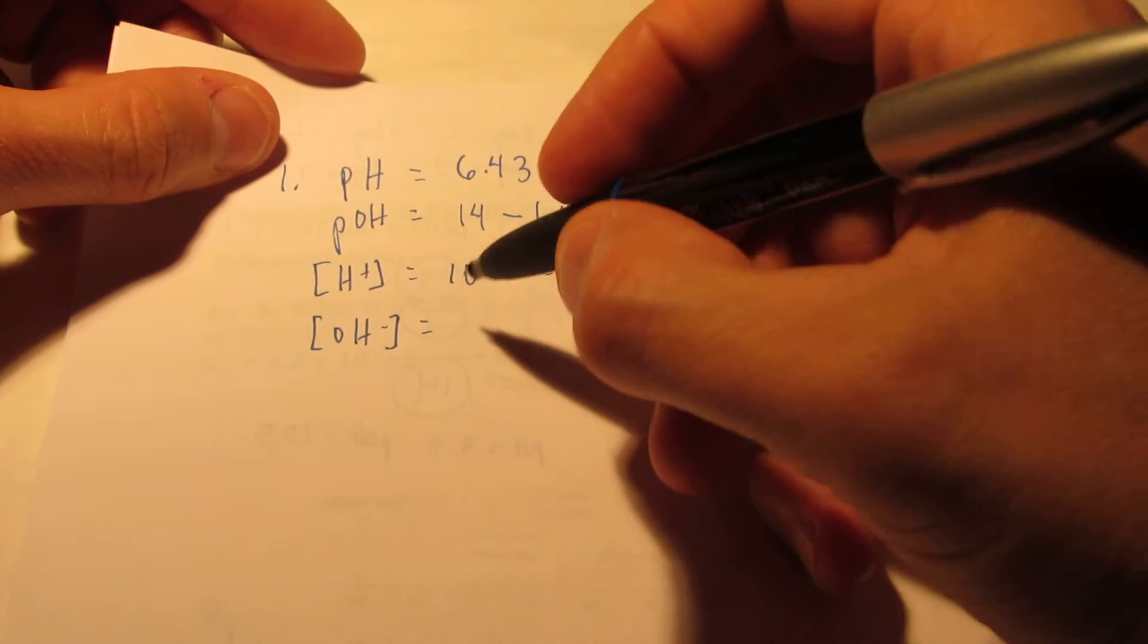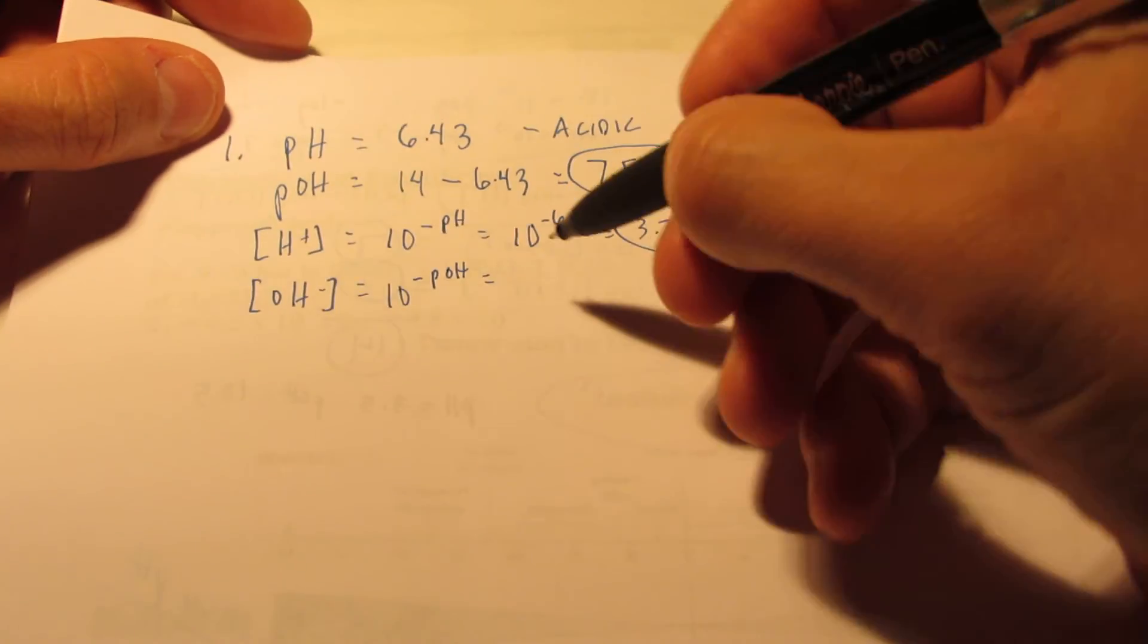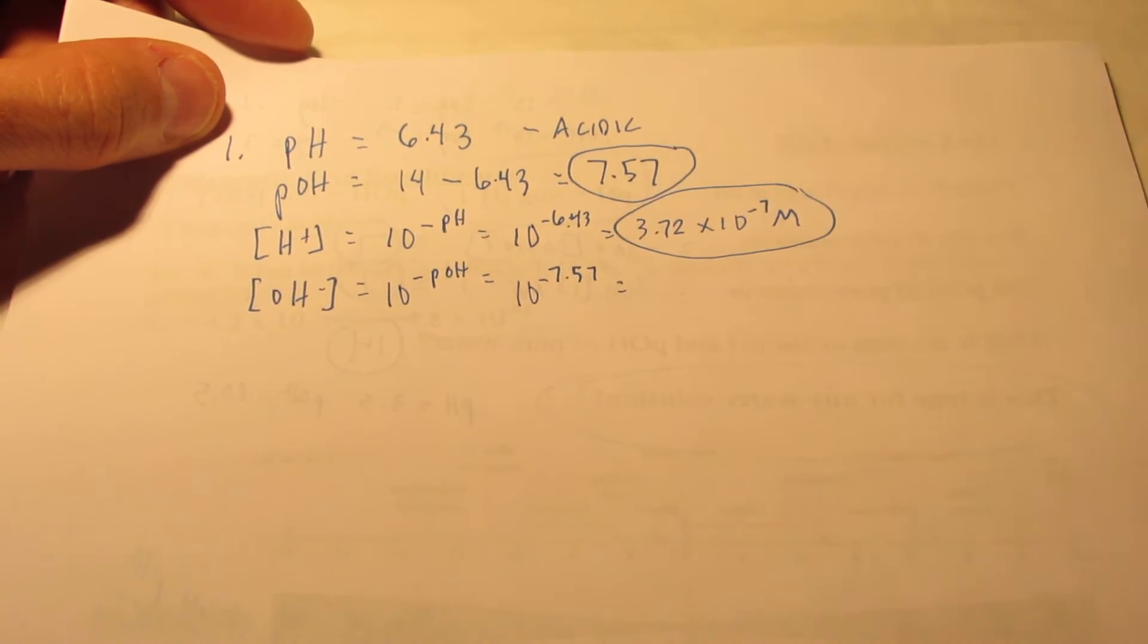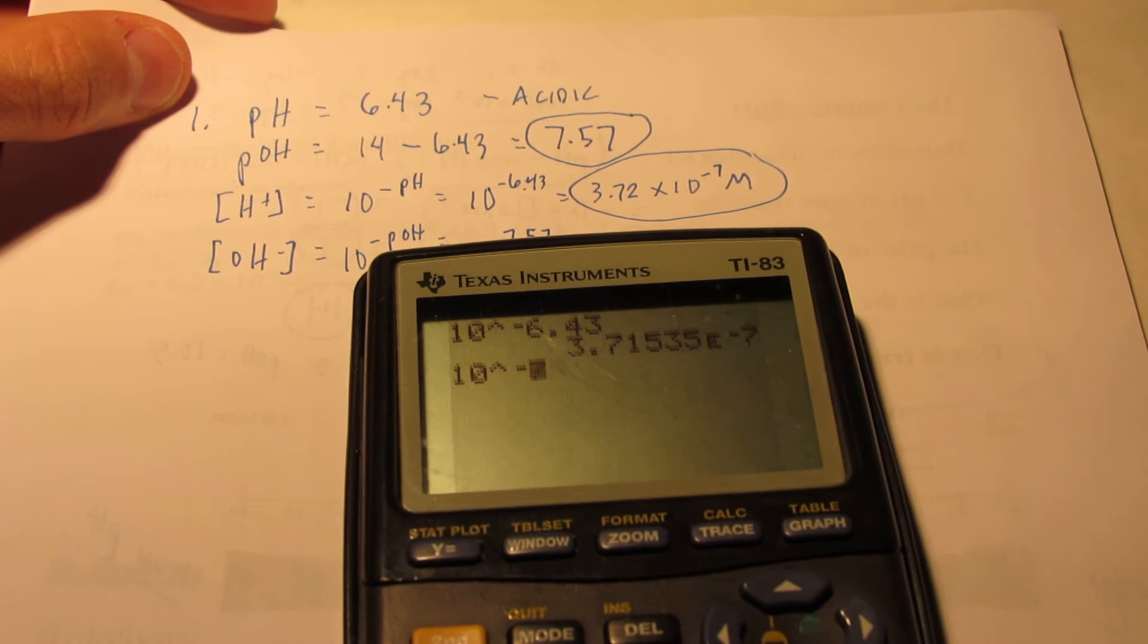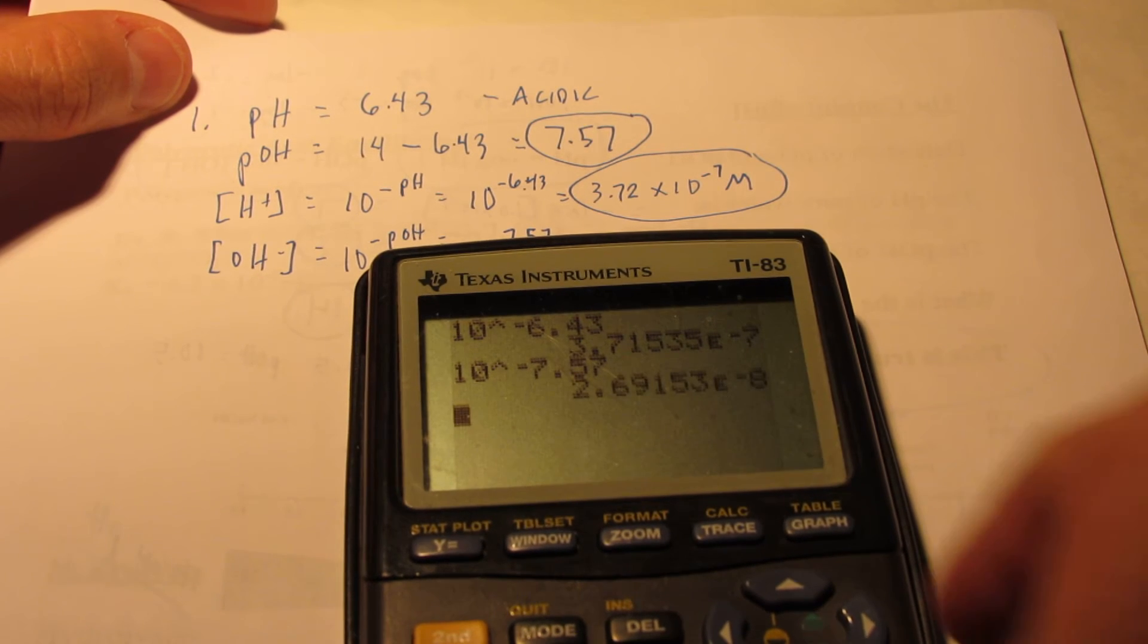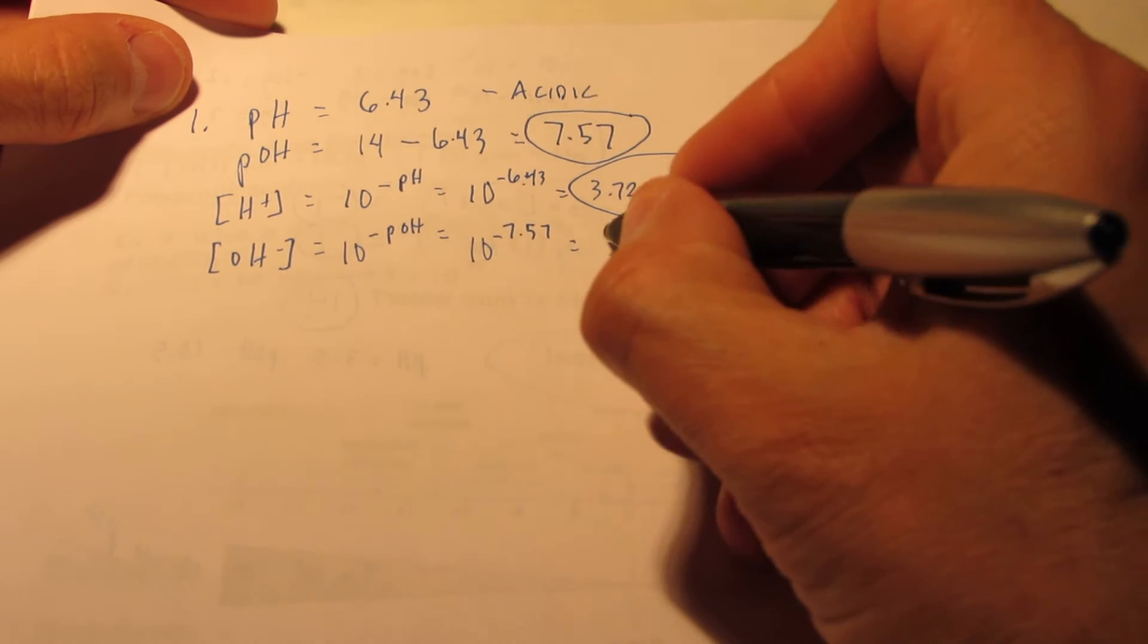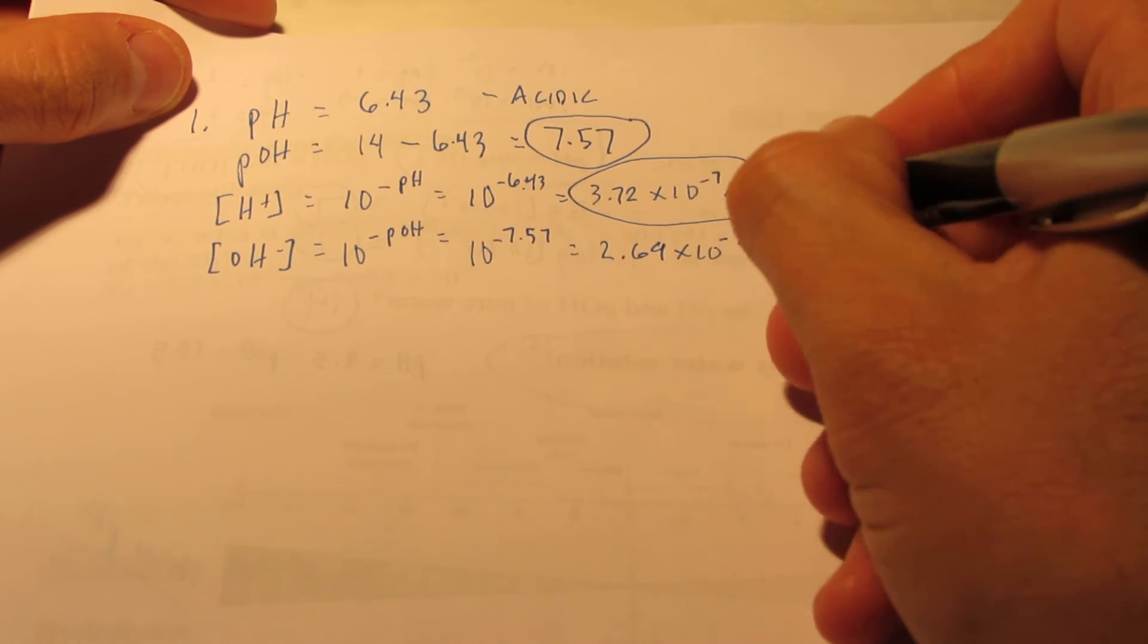The OH minus concentration is going to be 10 to the negative pOH. So we have 10 to the negative 7.57. Let's see what that is. 10 caret key negative 7.57. We end up with 2.69 times 10 to the negative 8. 2.69 times 10 to the negative 8 moles per liter.